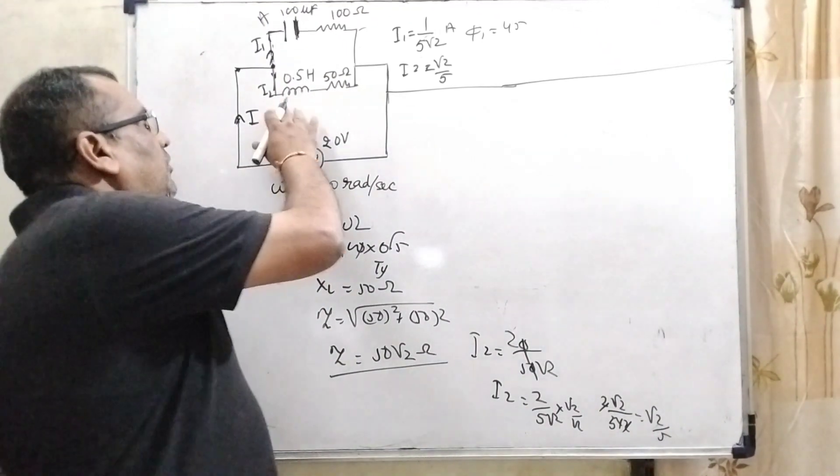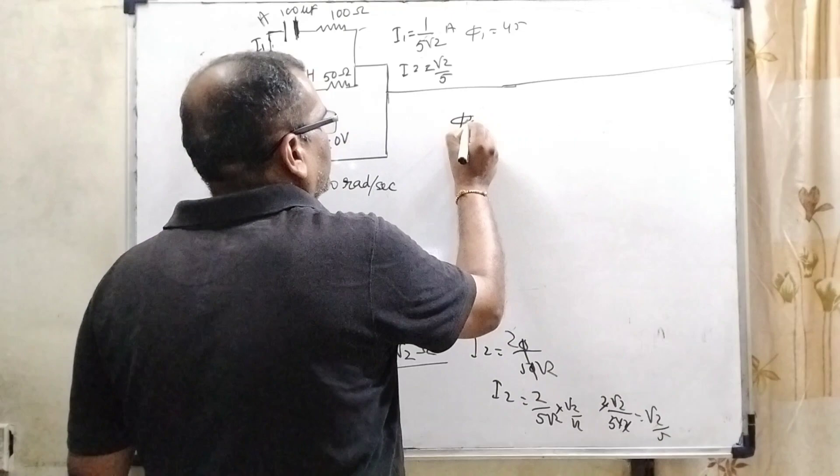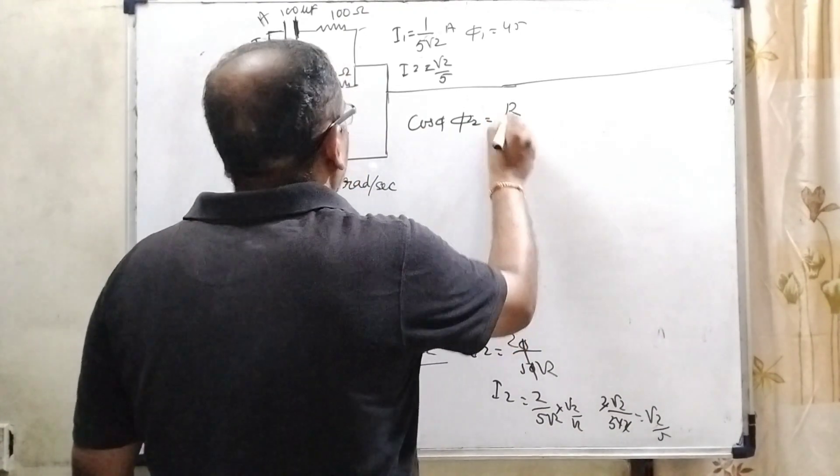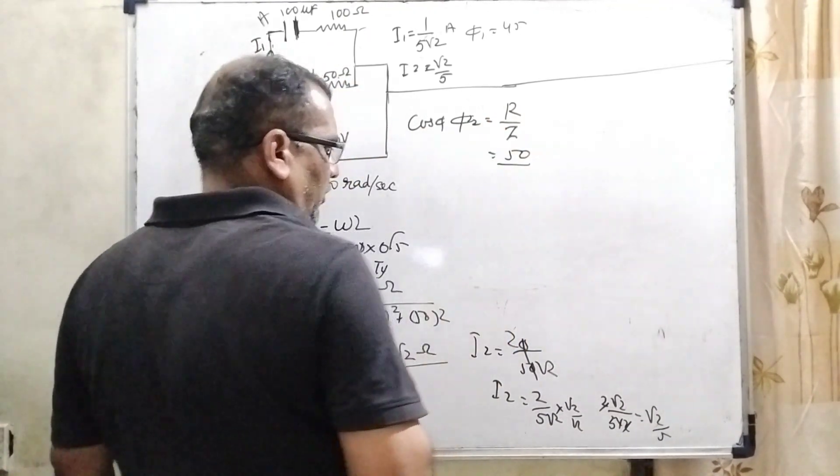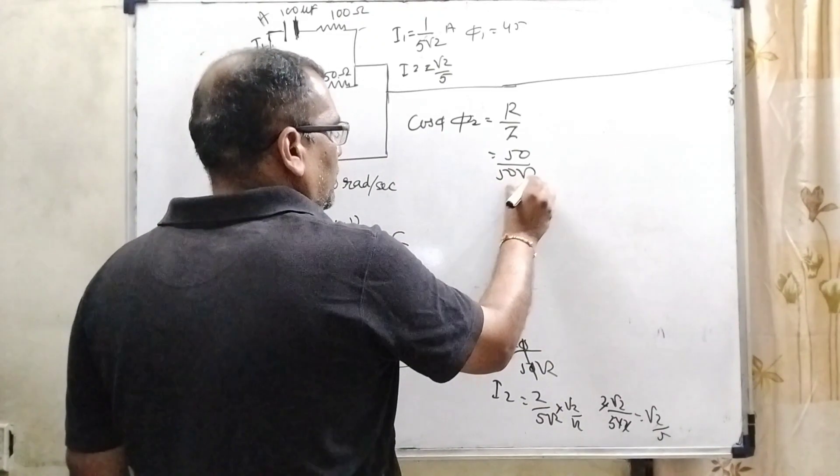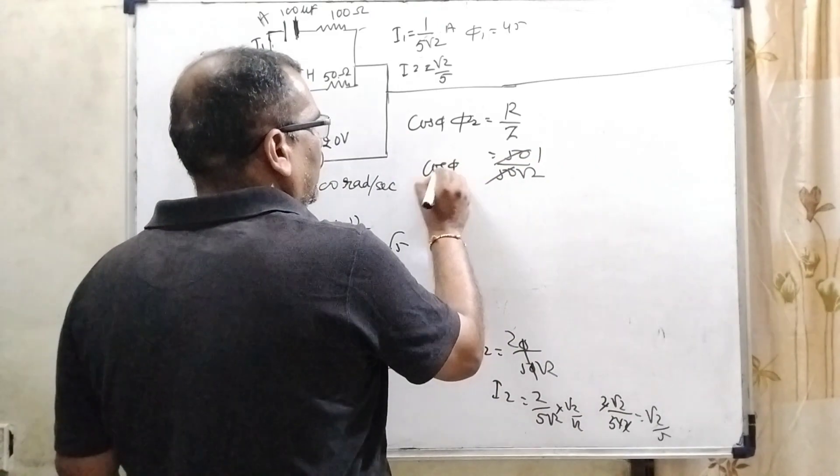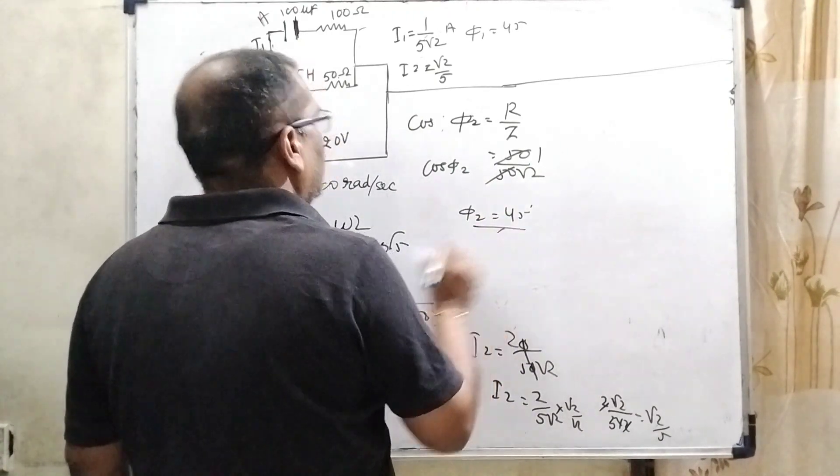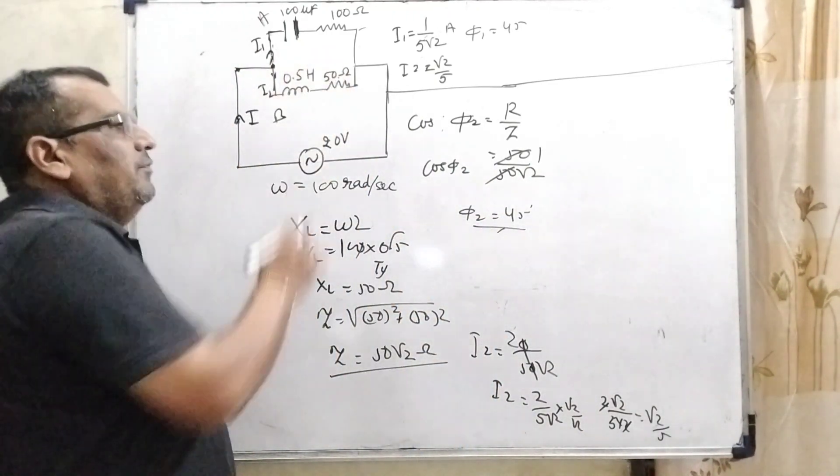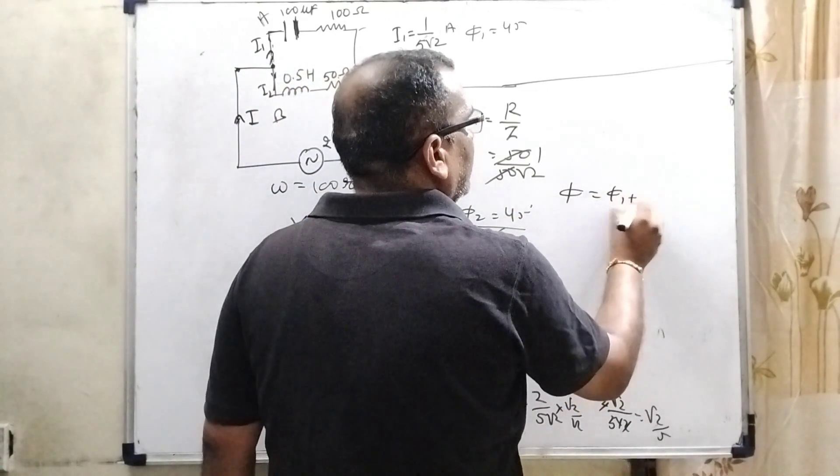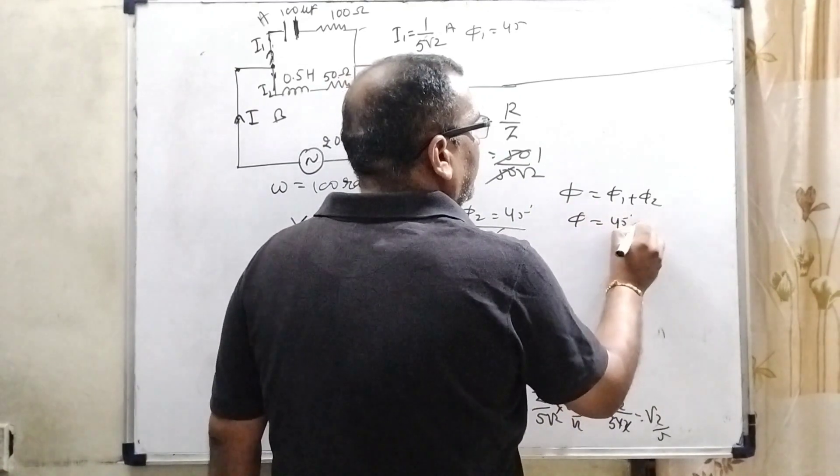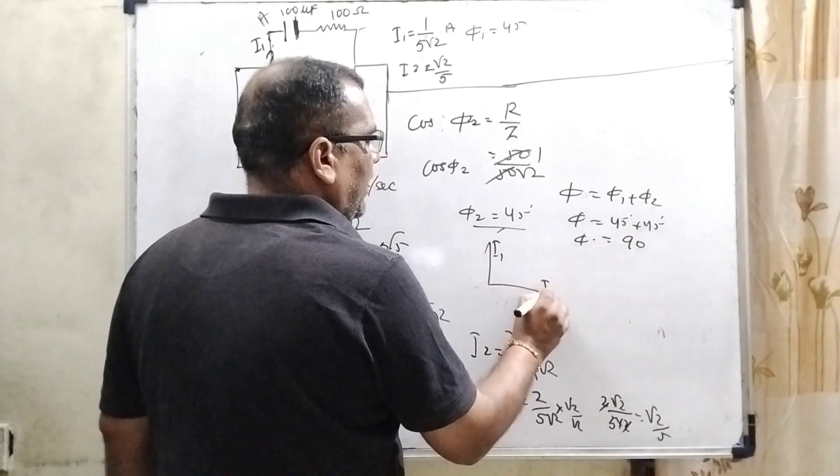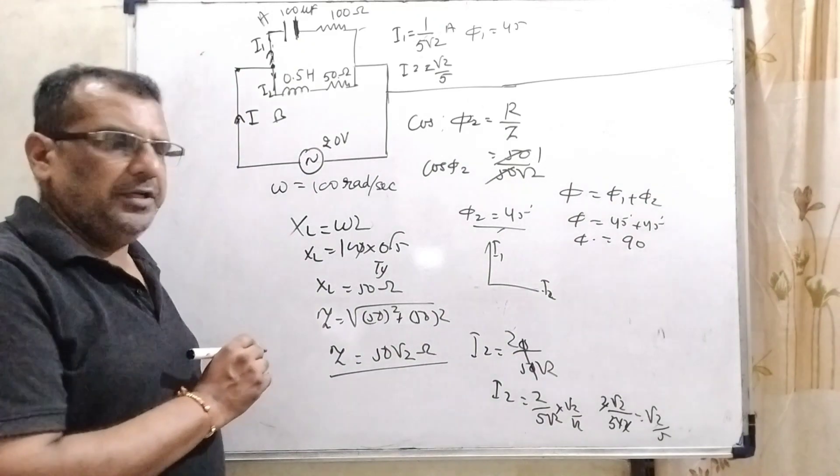Now again, we have to find out the phase difference phi 2. That is cos phi 2 equal to R by Z. Here what is R? That is 50 and what is Z? Here Z is 50 root 2. 50, 50 cancel out then cos phi 2 that is 1 by root 2. Again phi 2 equal to 45 degree. So here the difference 45 and then 45, then total phase difference is equal to phi 1 plus phi 2, means 45 degree plus 45 degree. That is 90 degree.